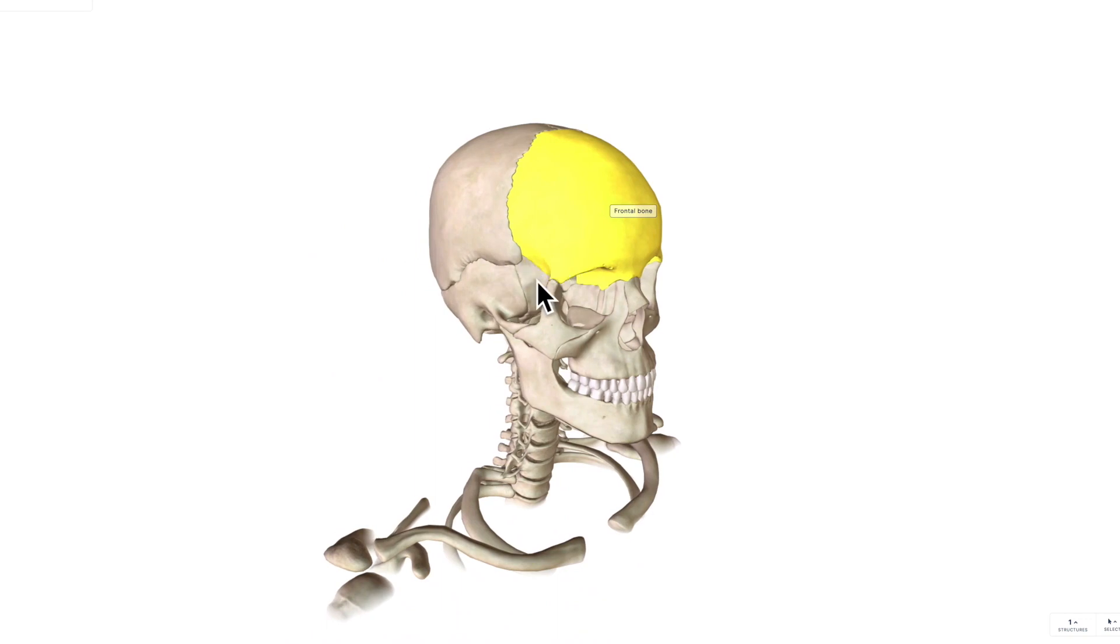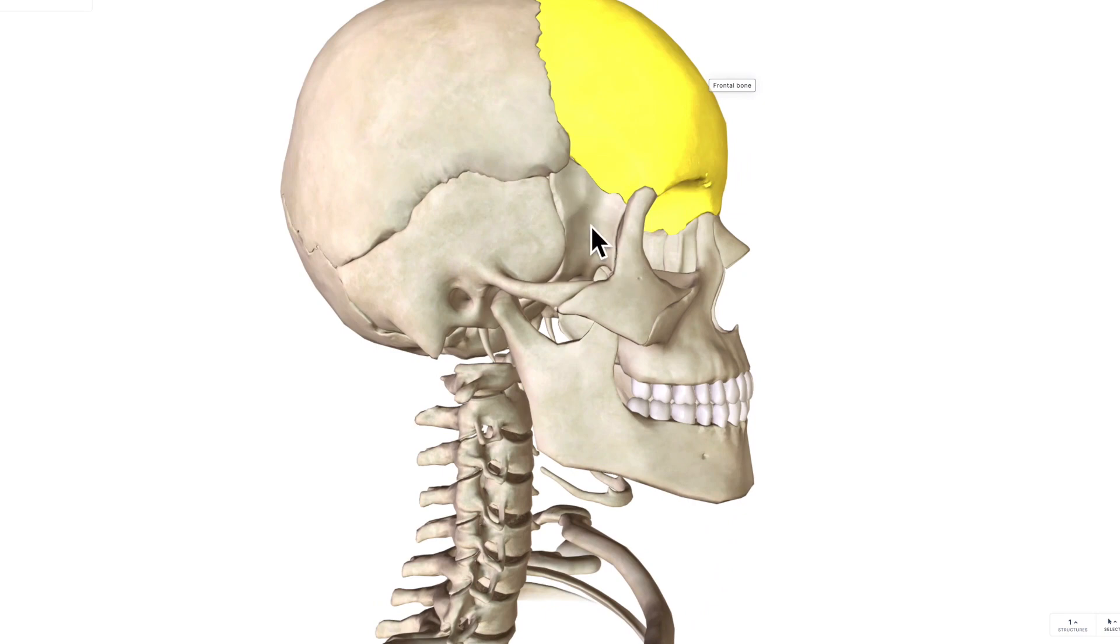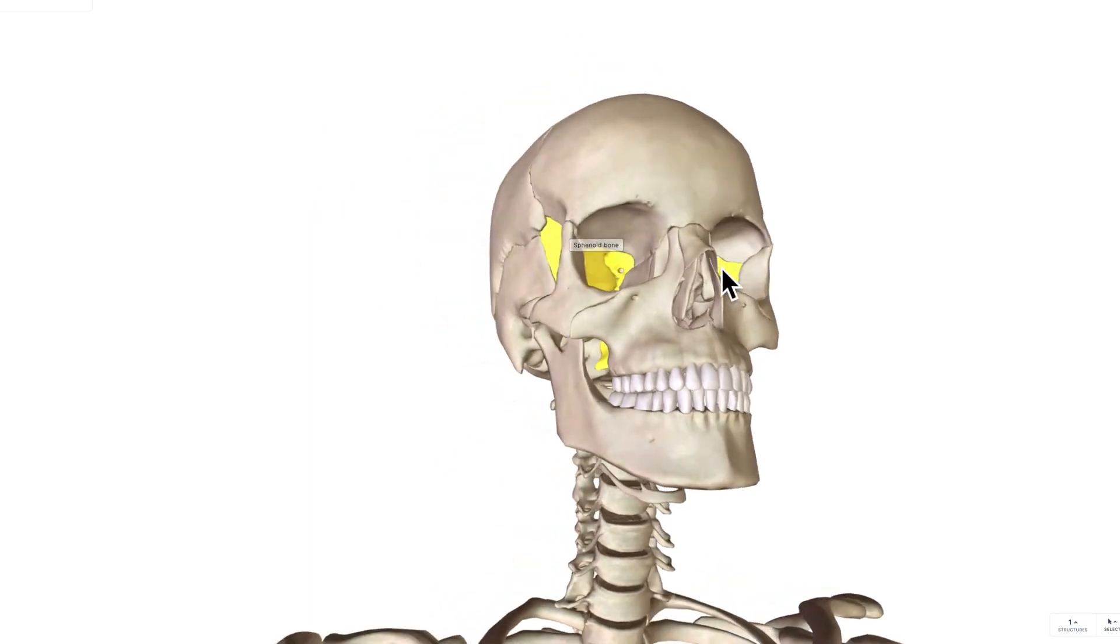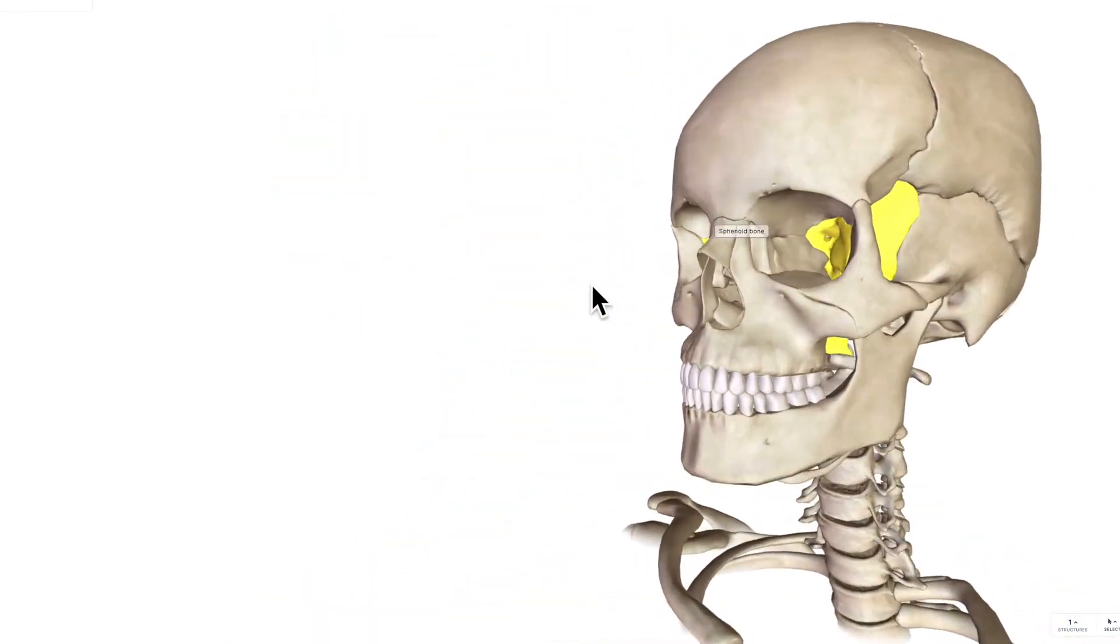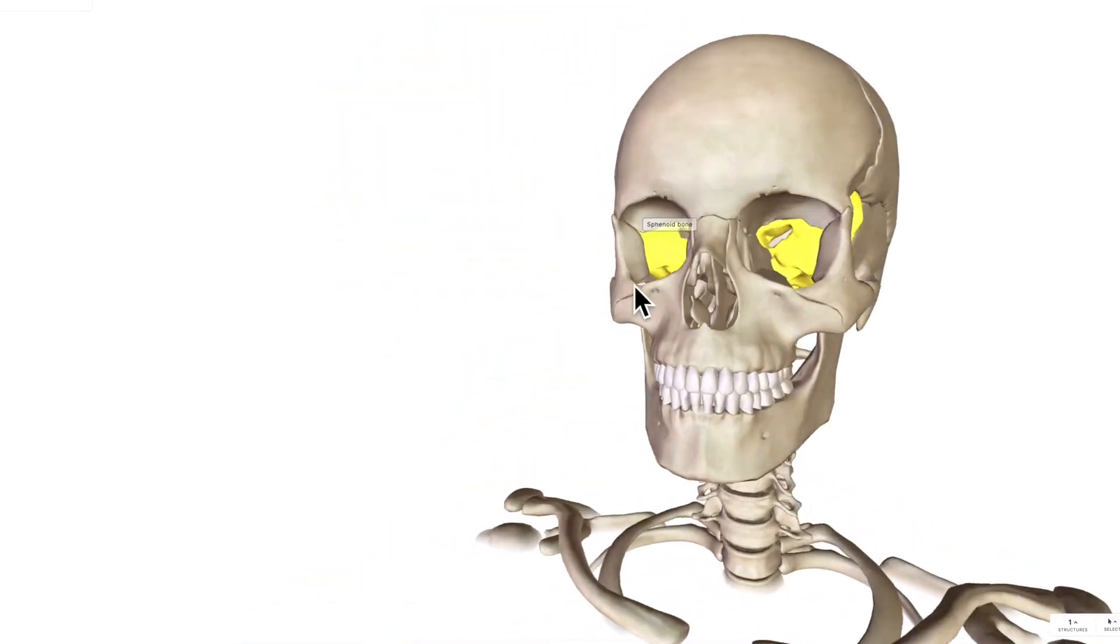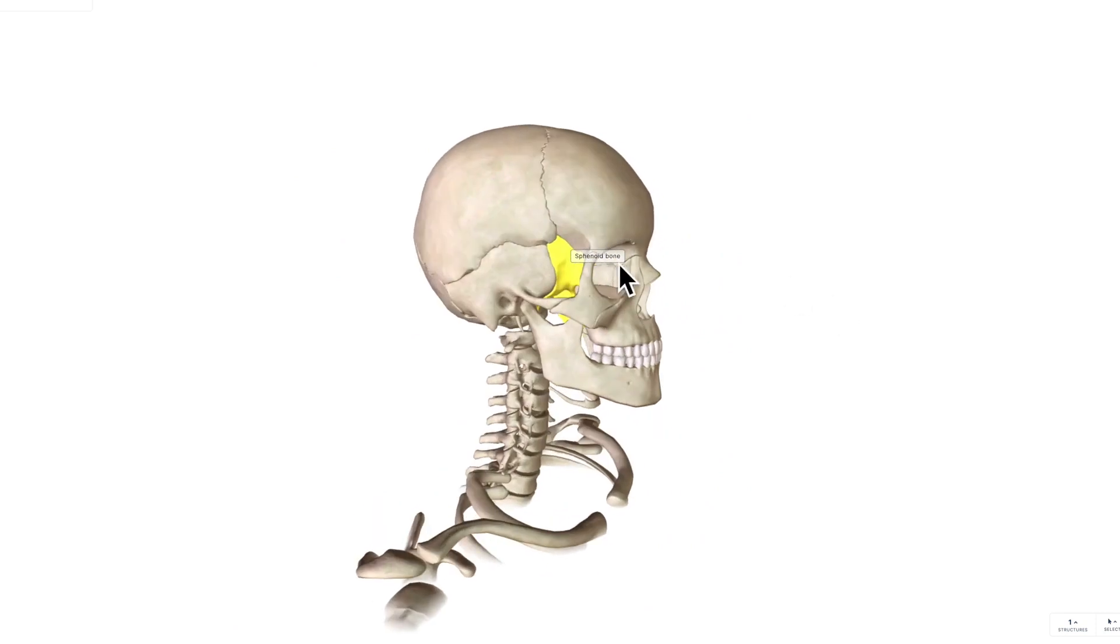And then the one bone which we're not going to talk about too much in today's video, but you can see it peeking through here, it's going to be called your sphenoid bone. You can see your sphenoid bone goes straight through, it's just one bone, but it pops out either side of the skull. So you can see it both laterally and anteriorly if you look through the orbits.